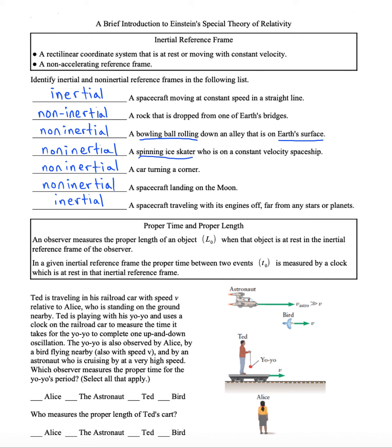Similarly, in a given inertial reference frame, the proper time between two events, T sub O, is measured by a clock which is at rest in that inertial reference frame.